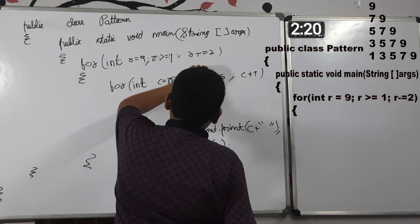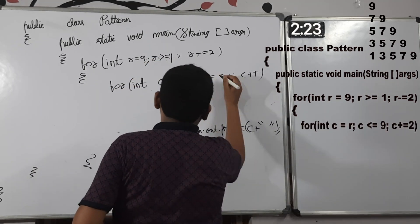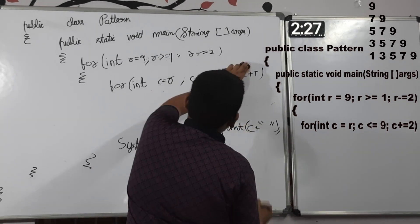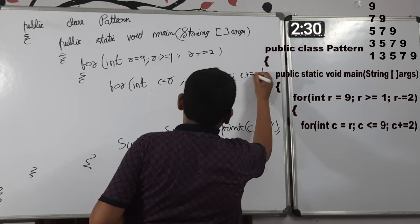Now, c is equal to r, c less than is equal to 9, c plus is equal to 2.